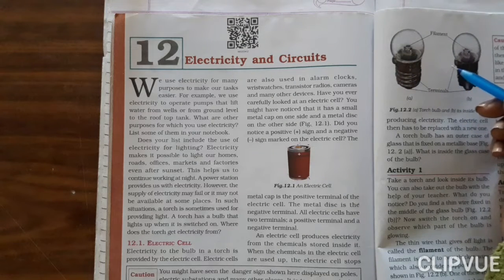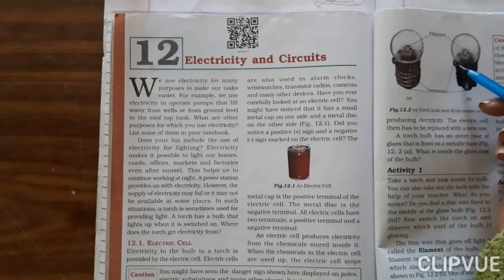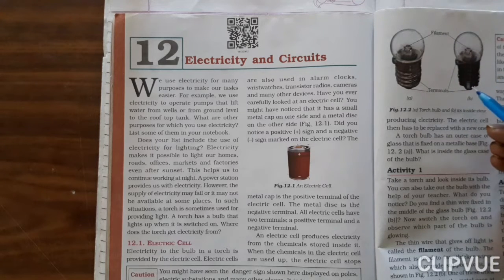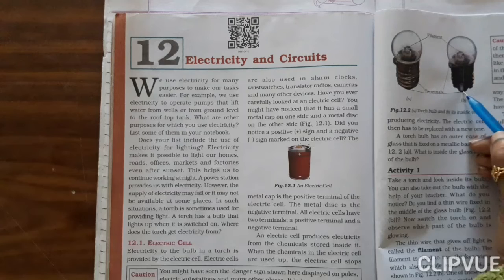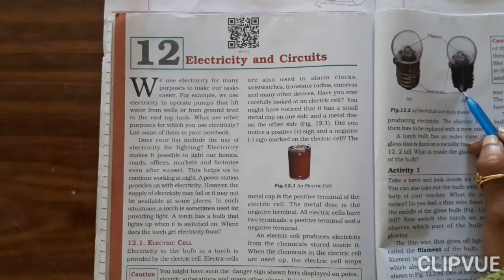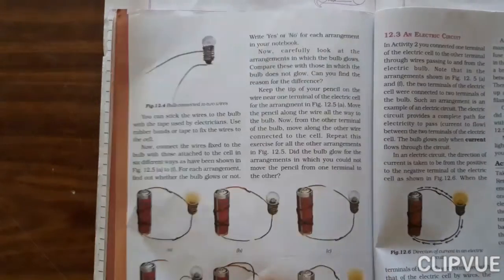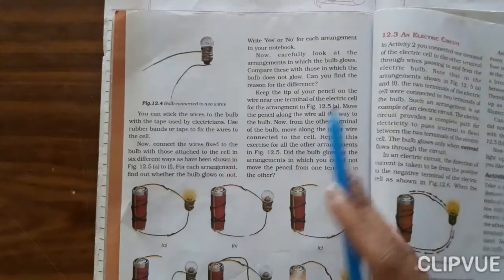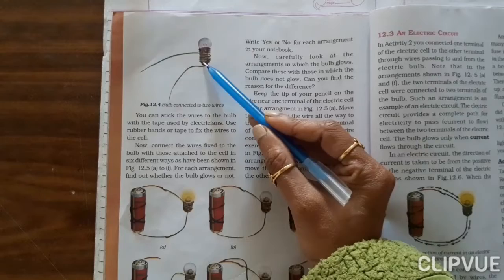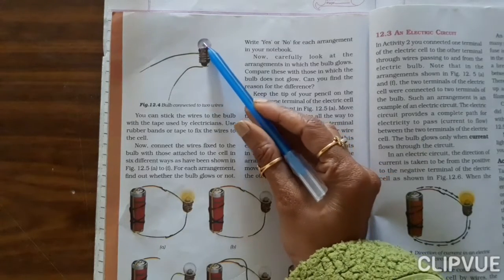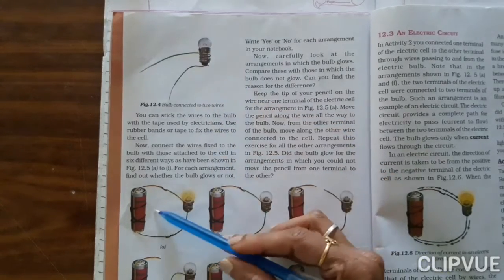Same way, in a bulb also it has two terminals as shown in the diagram over here. The top portion of the metallic cap is the positive terminal, whereas the bottom portion of the metallic cap acts as a negative terminal. Now kids, whenever we make a circuit or when we want to glow this bulb, let us try to attach this bulb with this cell.